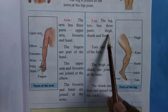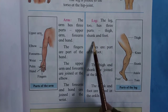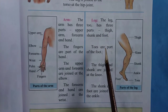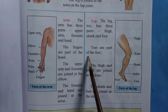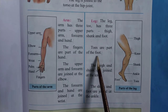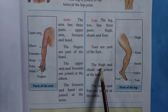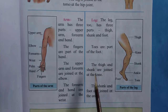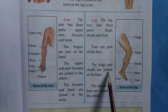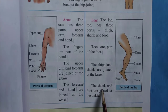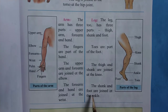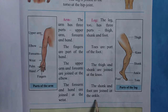The leg also has three parts: thigh, shank, and foot. Toes are part of the foot. The thigh and shank are joined at the knee. The shank and foot are joined at the ankle.